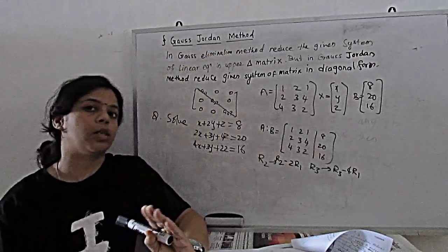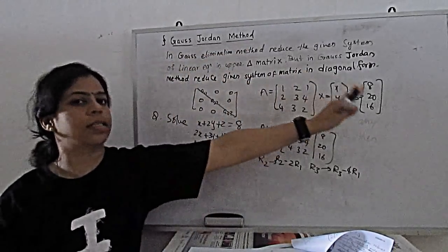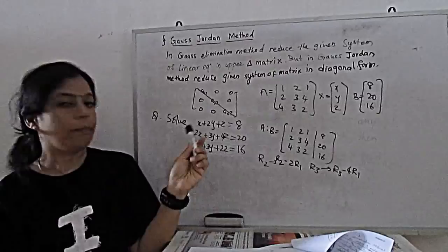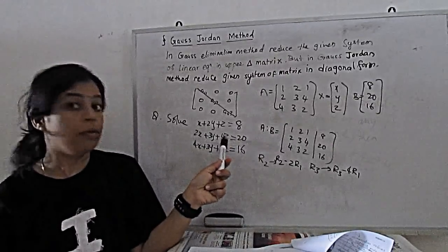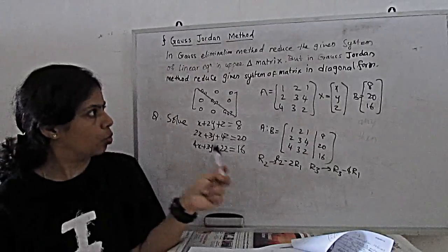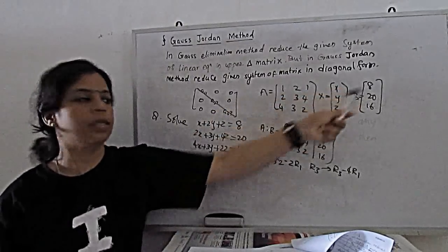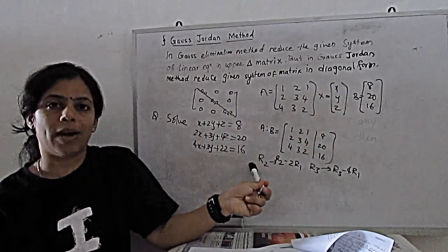Here first we have to arrange into matrix form A, X and B. A is our matrix of coefficients 1, 2, 1, 2, 3, 4, 4, 3, 2. X is XYZ and B is right hand side 8, 20 and 16.